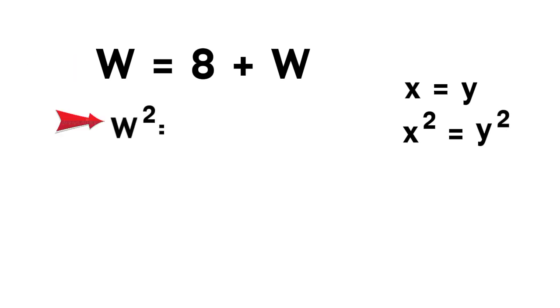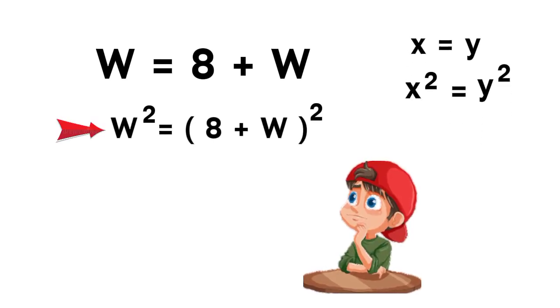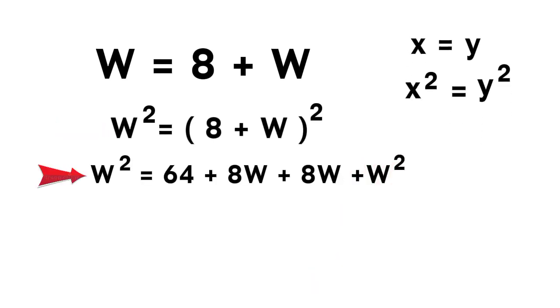We get W squared equals 8 plus W squared. Let's expand it. This becomes W squared equals 64 plus 16W plus W squared.